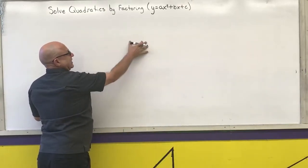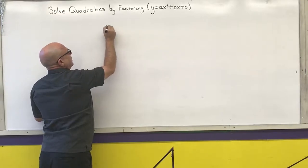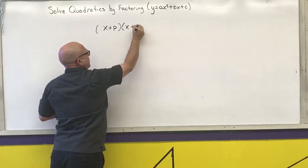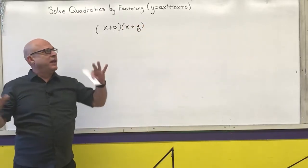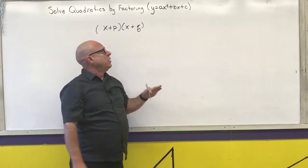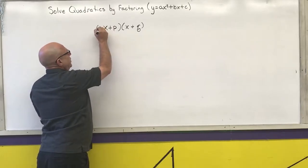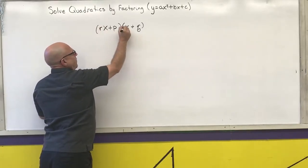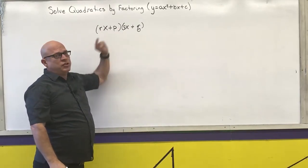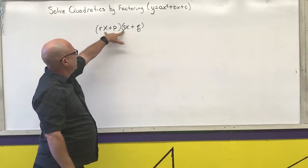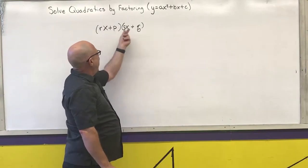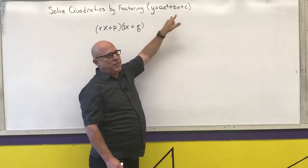So in the last case, we had x plus a number times x plus another number, and we ended up multiplying that together and figuring out that I needed two numbers that multiplied to the last that added to the middle. Now we may have coefficients in front of these two things, so I'm going to FOIL this thing out and see what pattern matches.